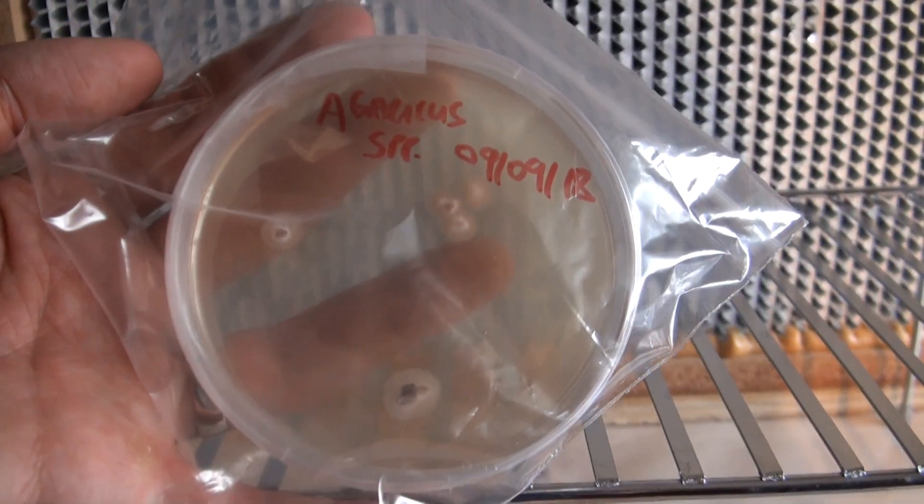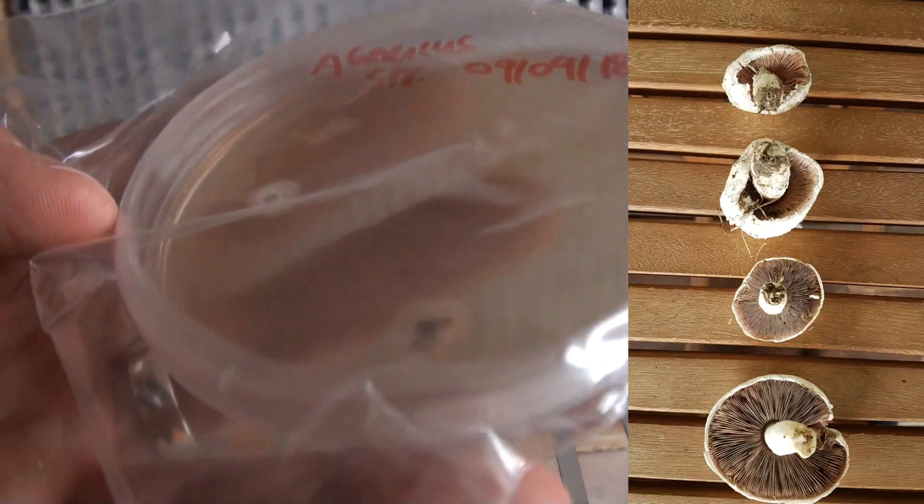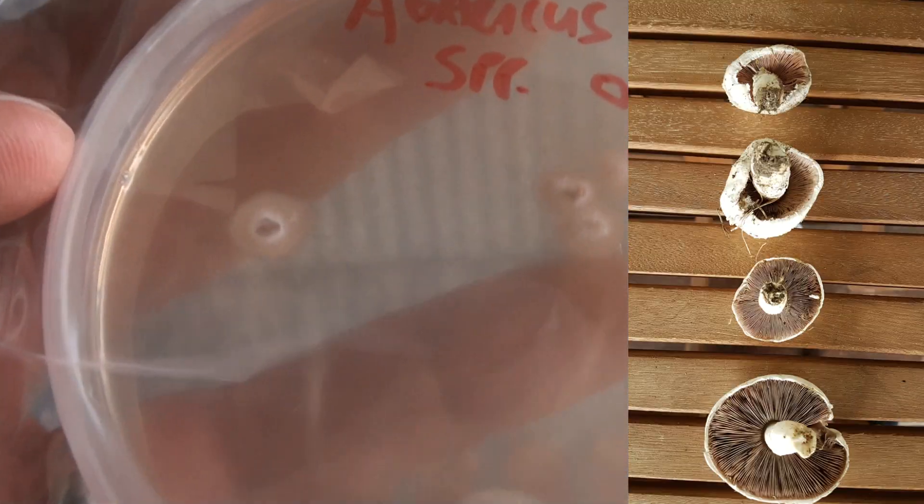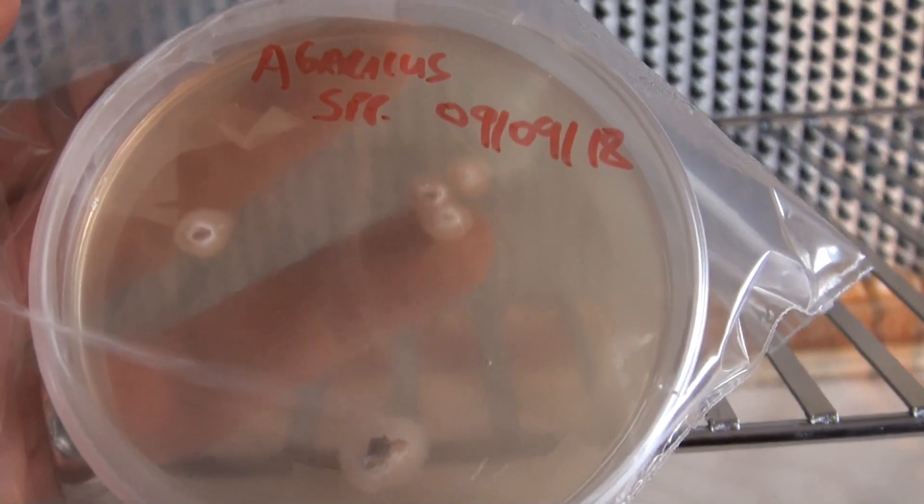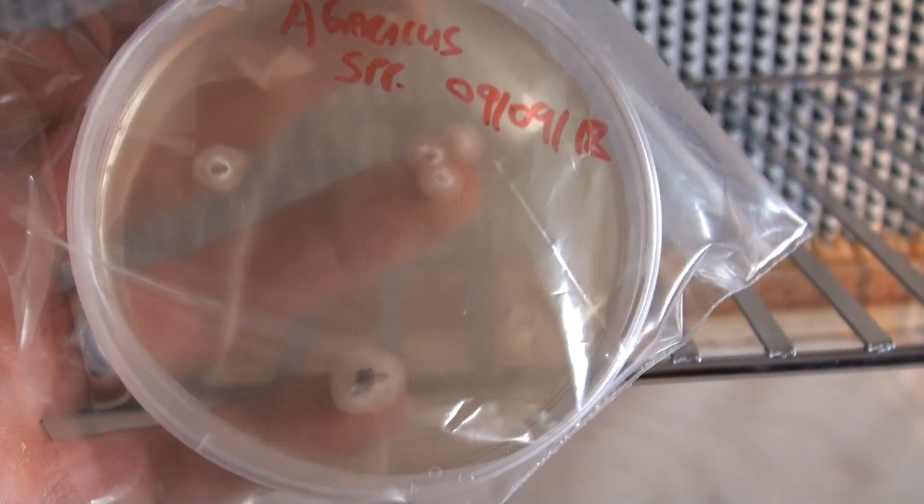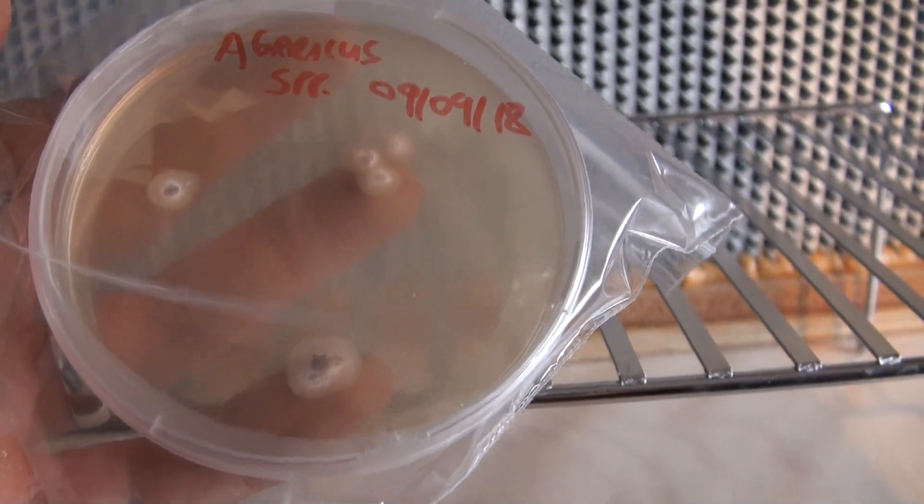Here's another one. This is an Agaricus species that I cloned. And as you can see, mycelium is starting to grow out from the pieces of tissue. Again, it doesn't look like there's any contamination here. But you never know. I'll have to do a few transfers just to make sure I have a pure culture.